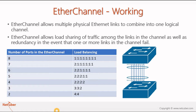EtherChannel allows multiple physical Ethernet links to combine into one logical channel. The maximum number of physical links you can bundle is eight. It works using a hashing algorithm that decides which data flow goes to which link. If you have eight physical links bundled into one logical link, the eight data transfers are distributed across each link. If you have seven ports, the ratio changes accordingly. This table shows the format the hashing algorithm follows.